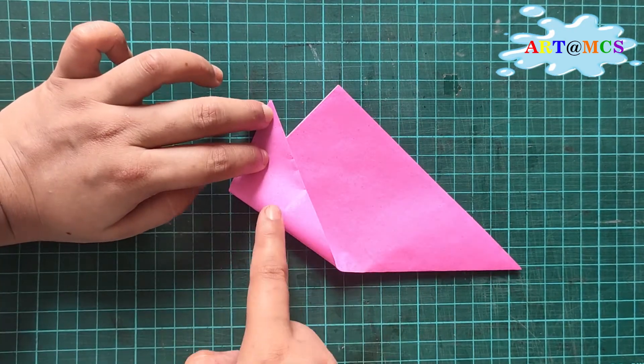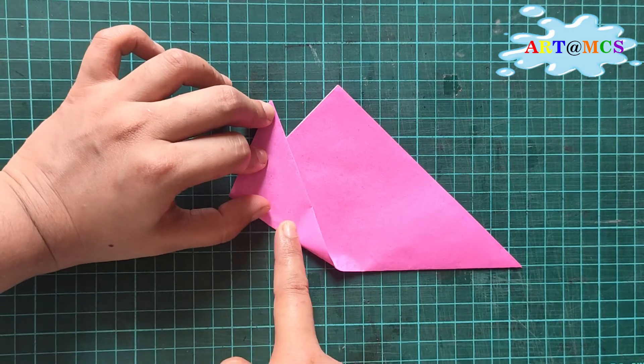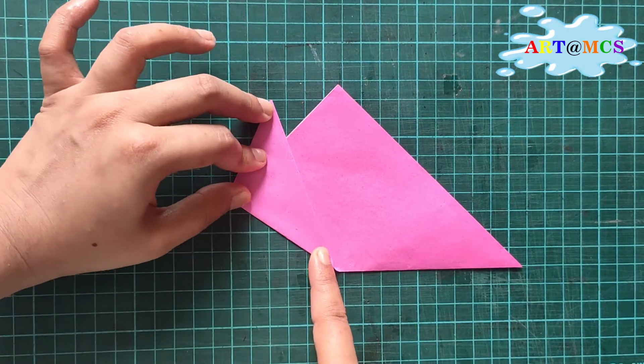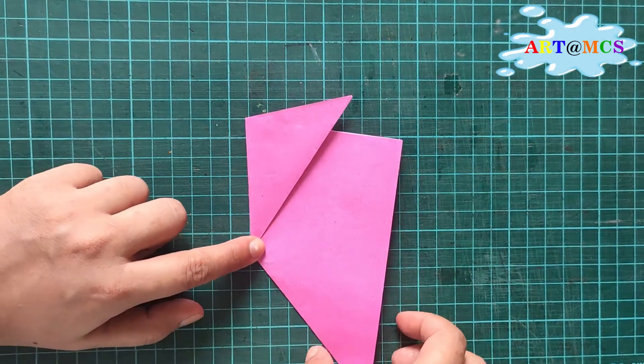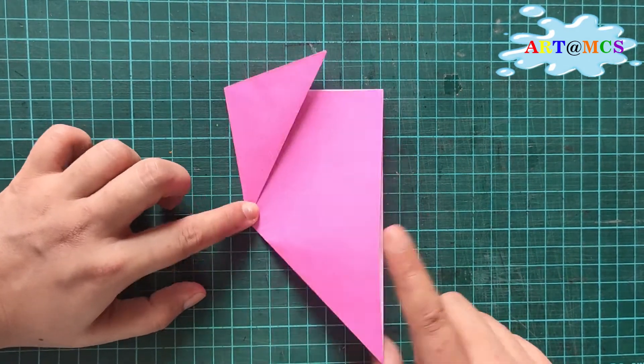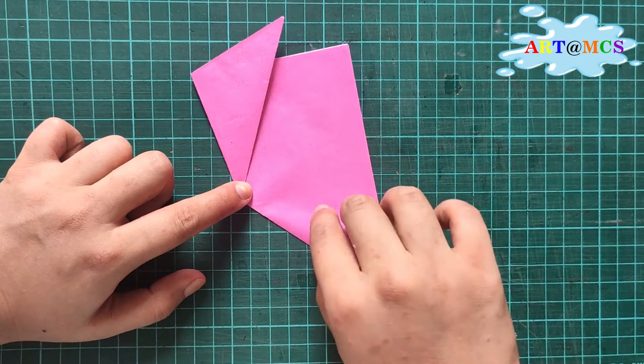Give a nice crease and press it with your fingers nicely. Hold to the point and fold the other side in the same way. Press the crease nicely with your fingers.